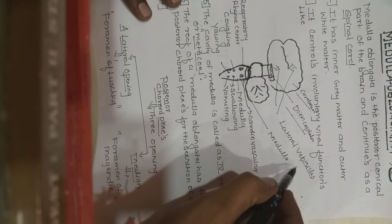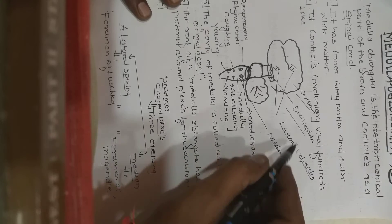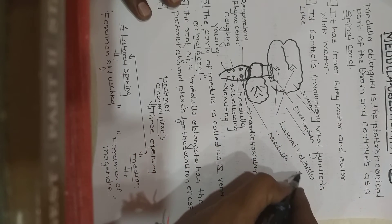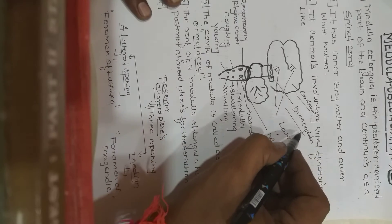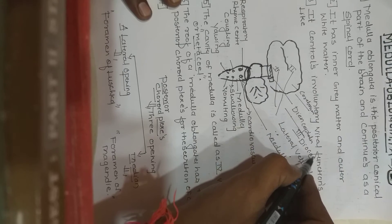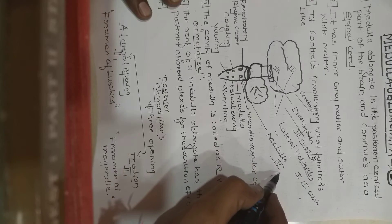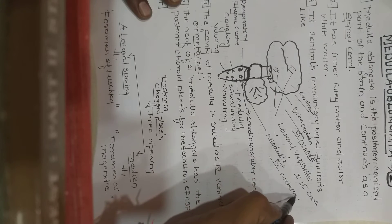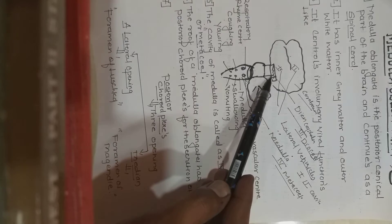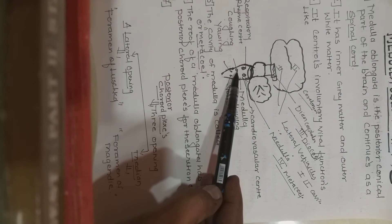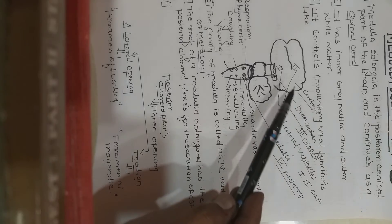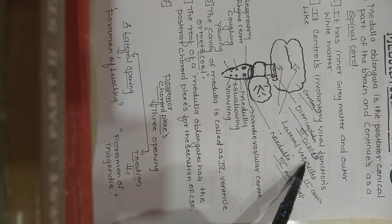So if anyone asks how many cavities are present in the brain: the first two are the lateral ventricles in the cerebrum; the third cavity is in the diencephalon, known as the diocoel; and the fourth cavity is in the medulla, called the metacoel. So there are four cavities in the human brain.